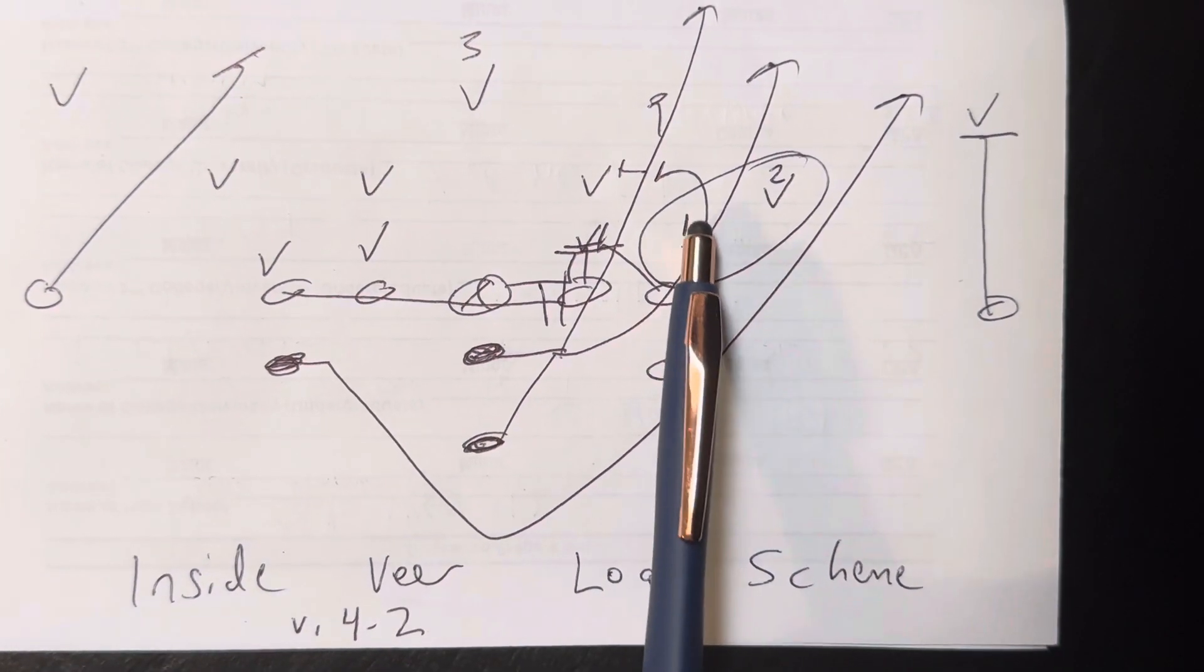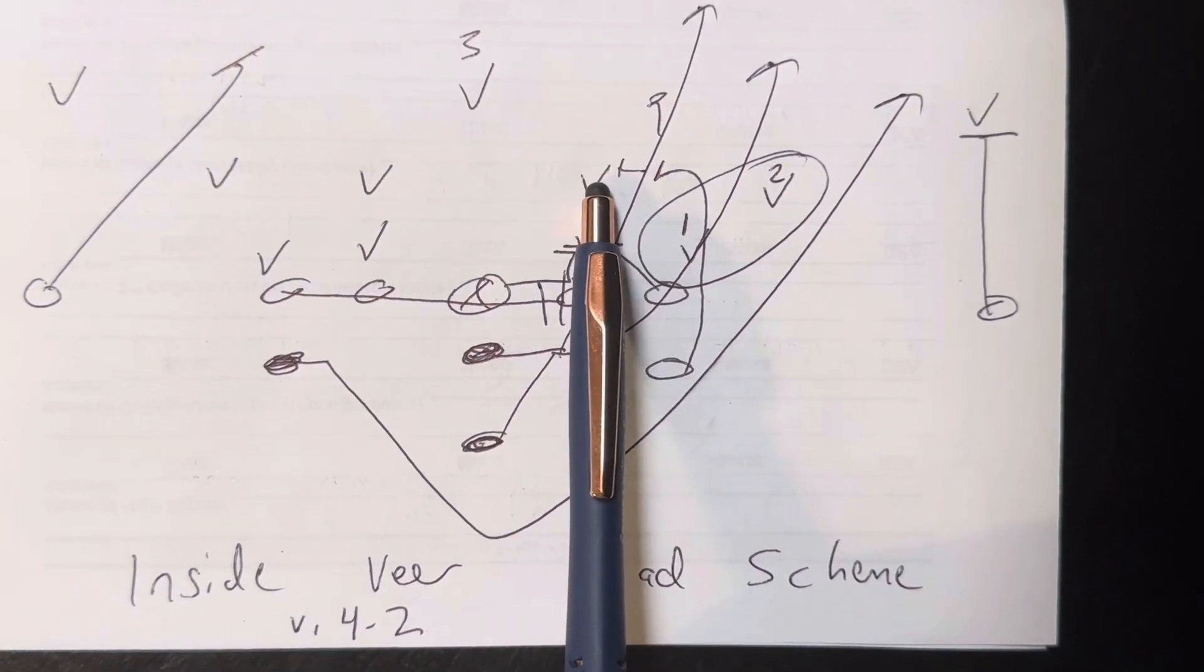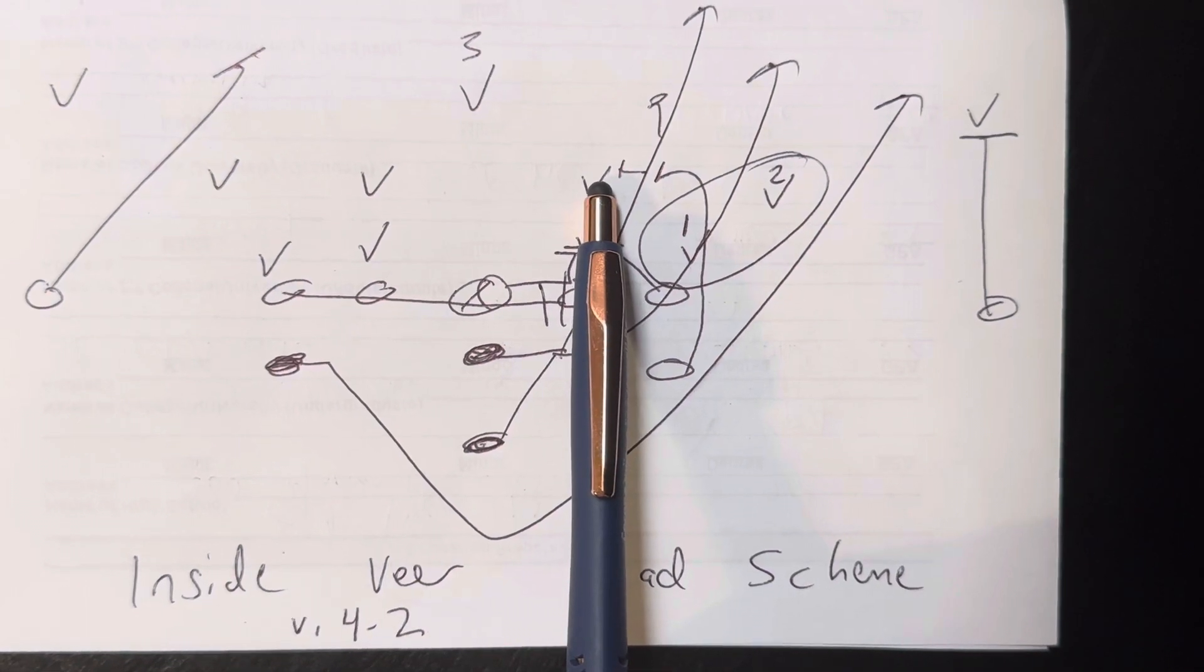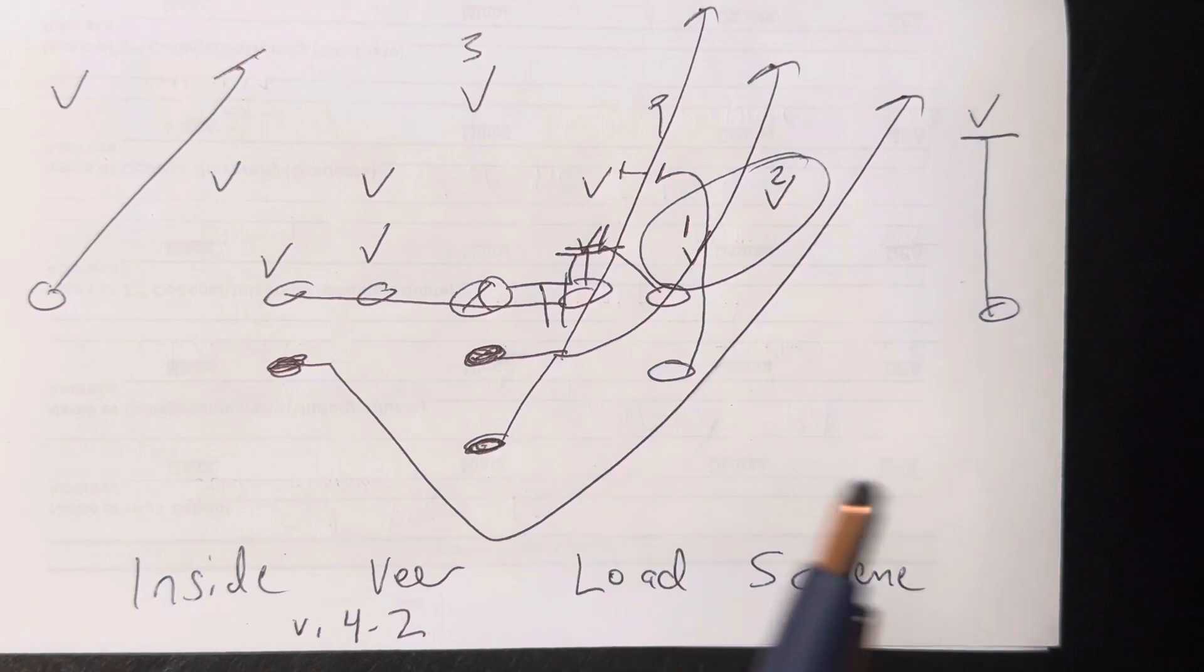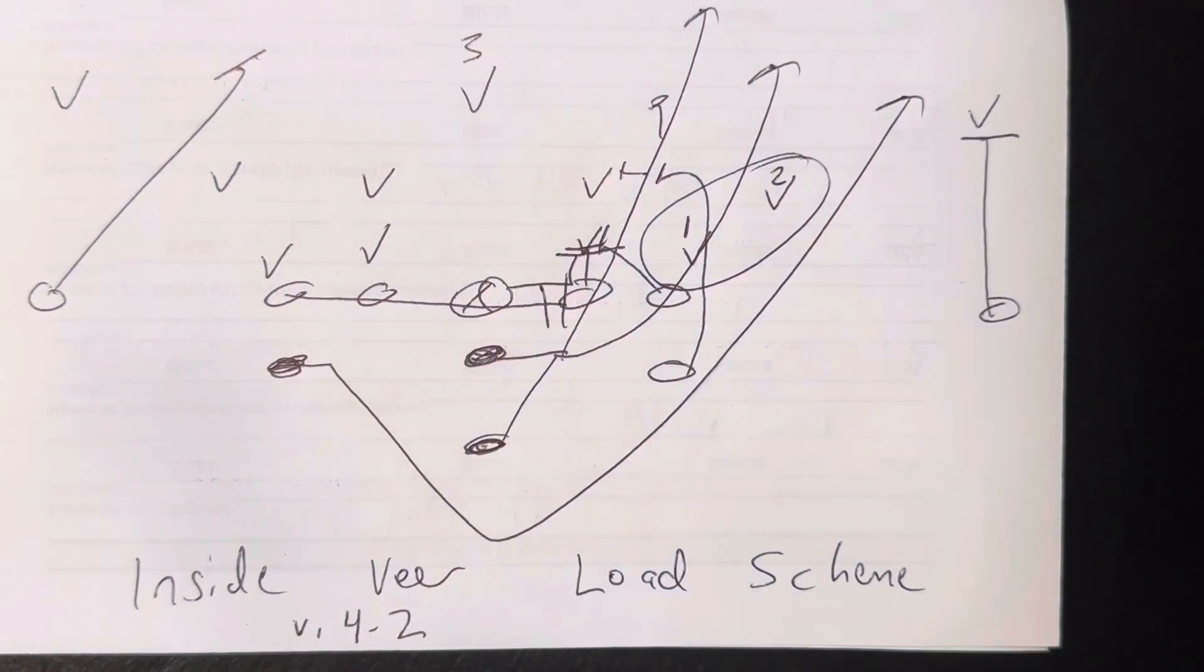Playside A-back steps with his inside foot, and he's going to work to get through the mic with his left knee left hand forwards northbound steps. If the mic blitzes or isn't there, he'll end up on the safety.